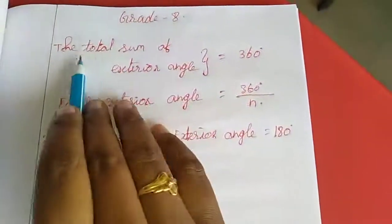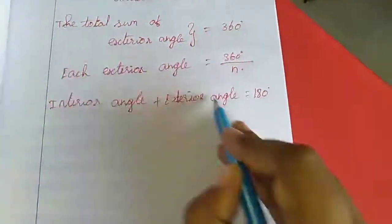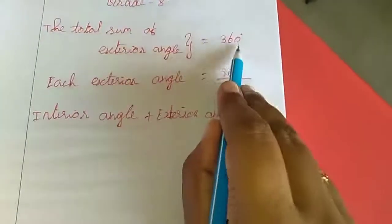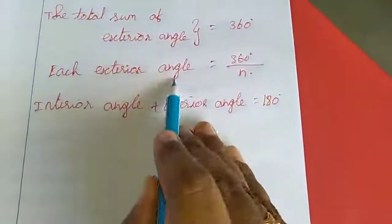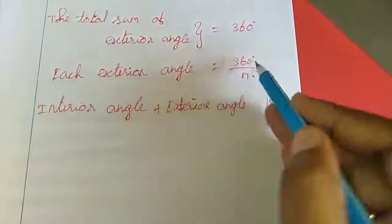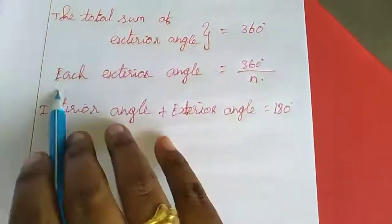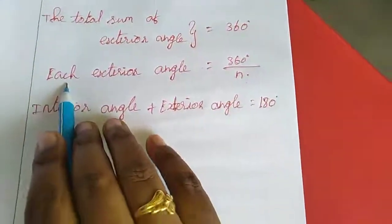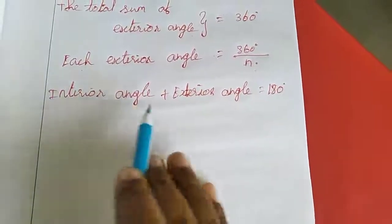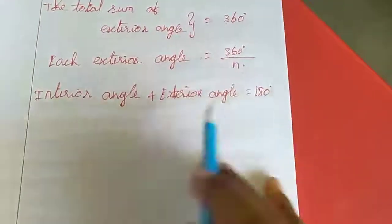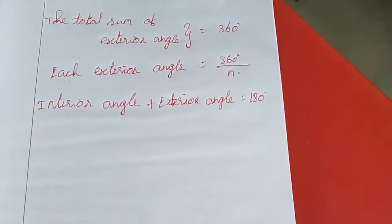The first formula is the total sum of exterior angles — adding all exterior angles gives 360 degrees. Each exterior angle equals 360 divided by n. This formula we will use for regular polygons. Next, interior angle plus exterior angle equals 180 degrees. These three formulas only we are going to use in this exercise.